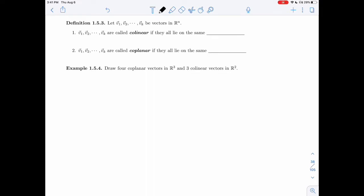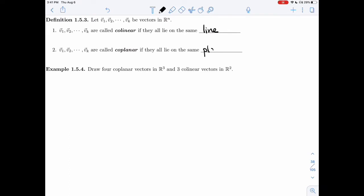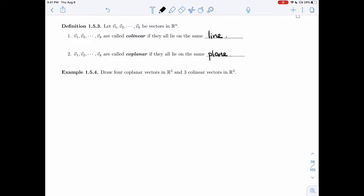they'll be called collinear if they lie on the same line. And they'll be called coplanar if they lie on the same plane. And again, the same caveat that I gave you earlier, it just means that it's parallel or that you could actually place them in it.